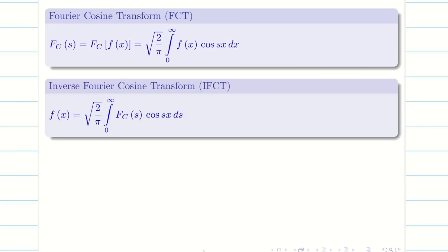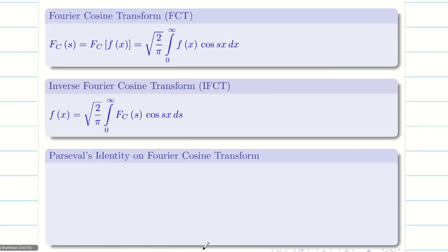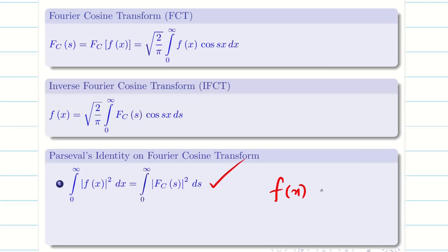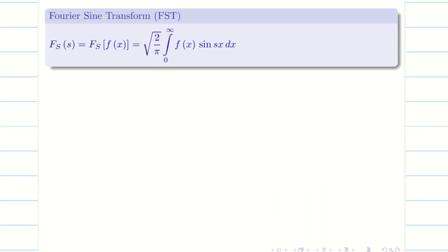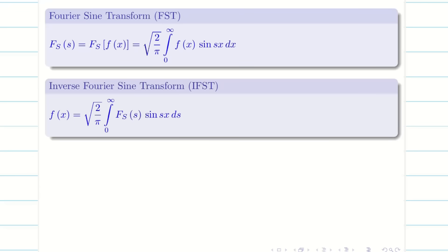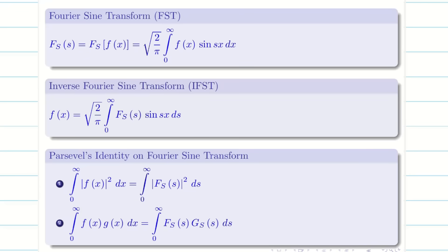For Parseval's identity with one function, the integral from 0 to infinity of |f(x)|² dx equals the integral from 0 to infinity of |Fc(s)|² ds. With two functions f(x) and g(x), whose cosine transforms are Fc(s) and Gc(s), we use the corresponding formula. The same approach applies for the Fourier sine transform.